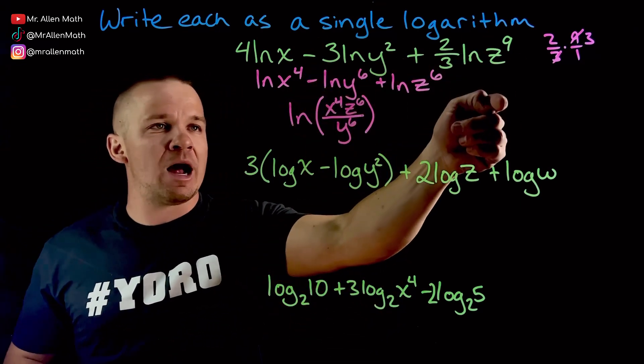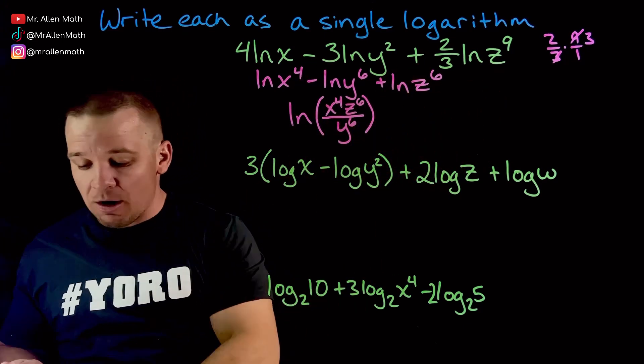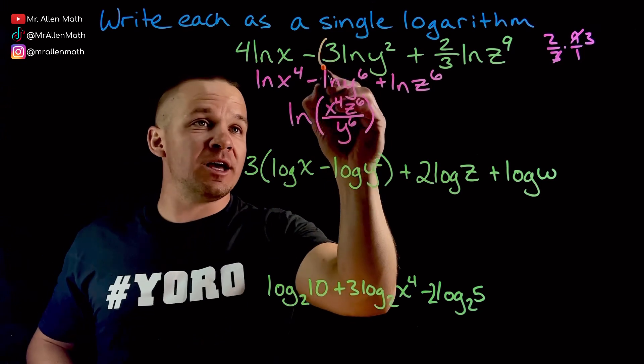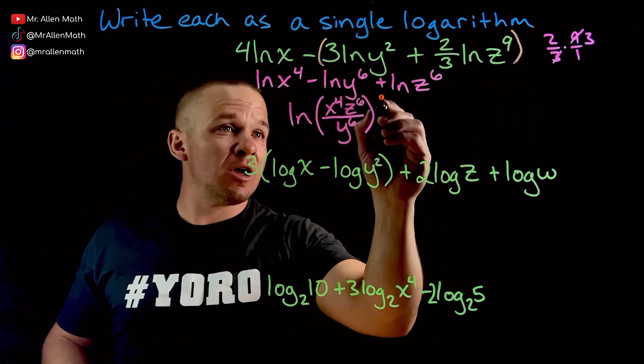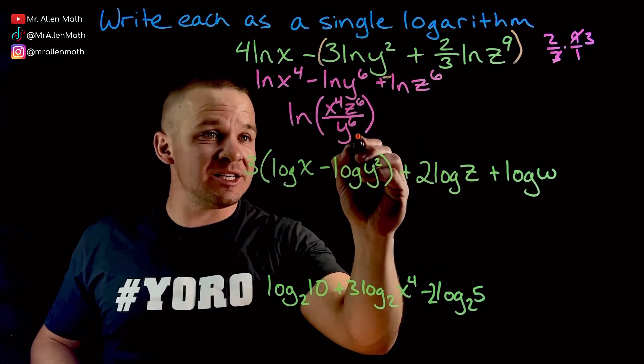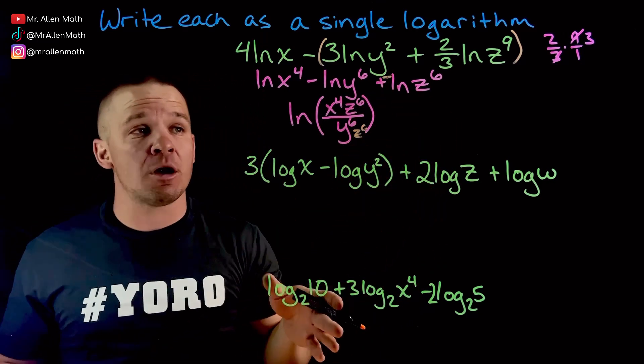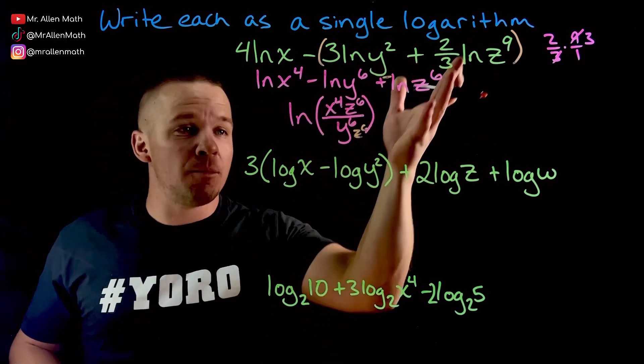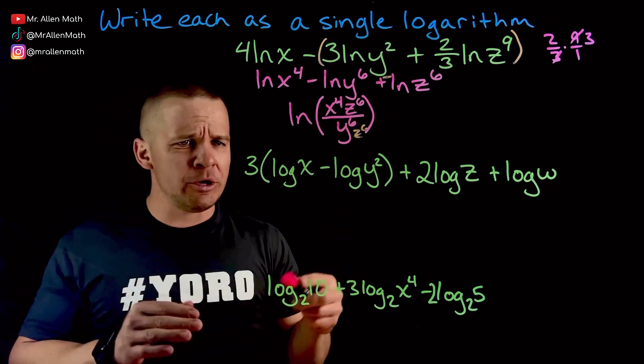Had there been parentheses here around this, that negative would have applied here. So in a what if scenario, had we had this right here, then I'd have a negative right here. And that would cause this z to the sixth. That guy would be down there in the denominator. That's not the situation here, but had it been, distribute, boom, that guy's down there. It's a what if in the orange.